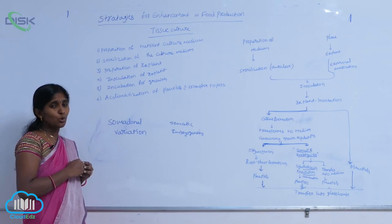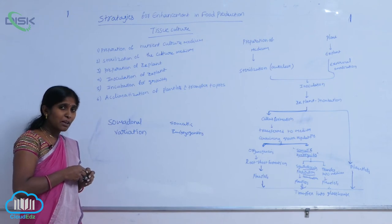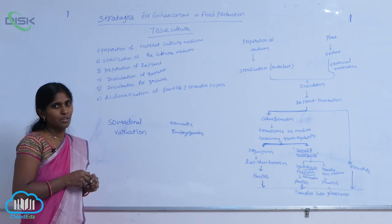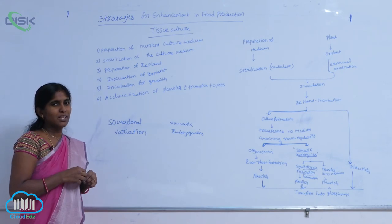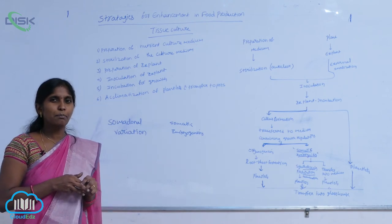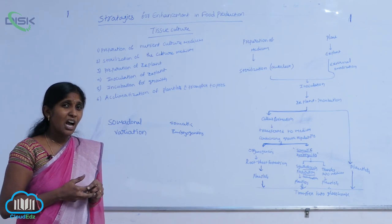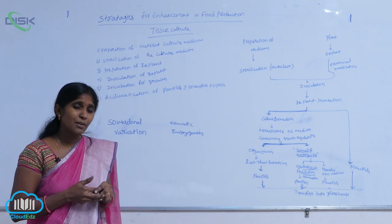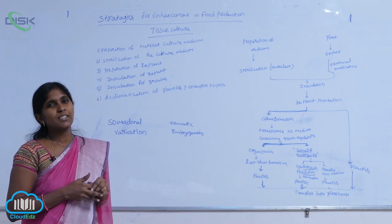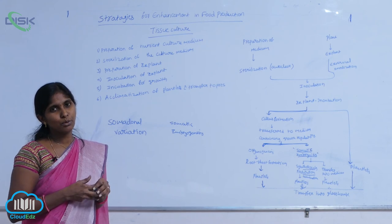Soma clonal variations are, from a plant breeding perspective, very helpful. For example, some soma clones show useful variation such as disease-resistant varieties, high-yield varieties, and drought-resistant varieties — these resistant plant types can be produced through tissue culture.